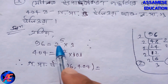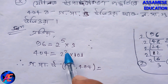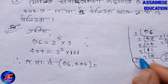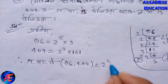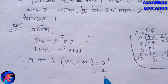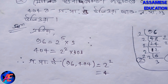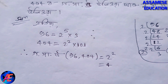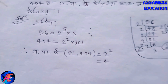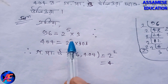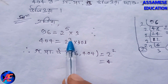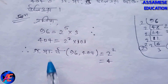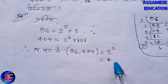Here we have 2 times 1, 2 times 2. This is 2 times 2 times 5, and now we have 2 squared, which is 4. So the HCF of 96 and 404 is 4. Now we need to find the LCM using the other factors.